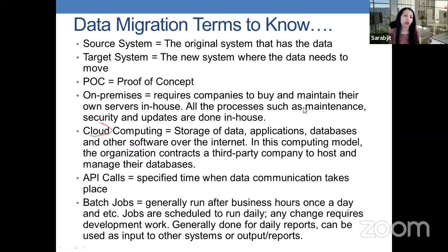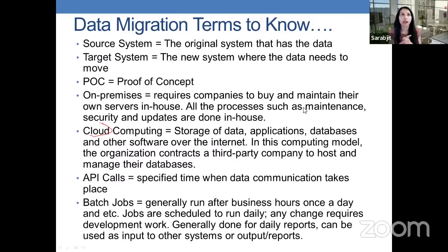Batch jobs are generally run after business hours, once a day, and are scheduled to run daily. Any change requires development work, generally done for reports or can be used for input to other systems or output reports. The reason I list these things is we're talking about data moving in and out of other systems. Even when data is not moving between systems, we often have API calls or batch jobs that are scheduled with our databases to send reports to your customers or clients.